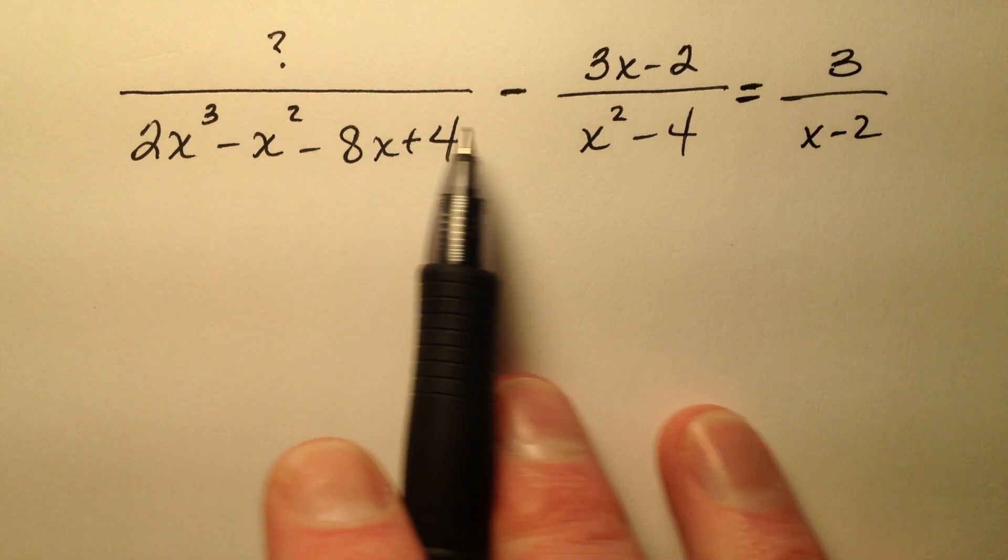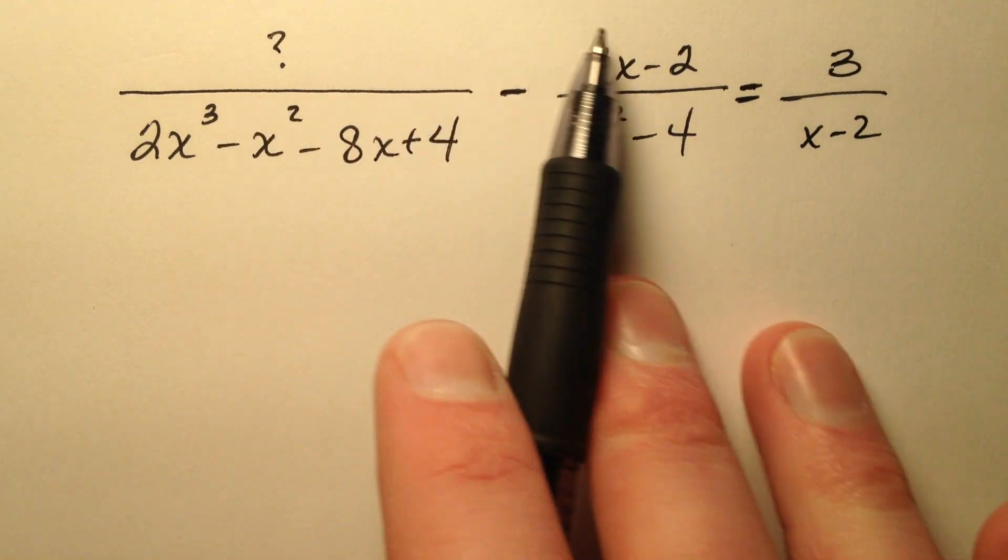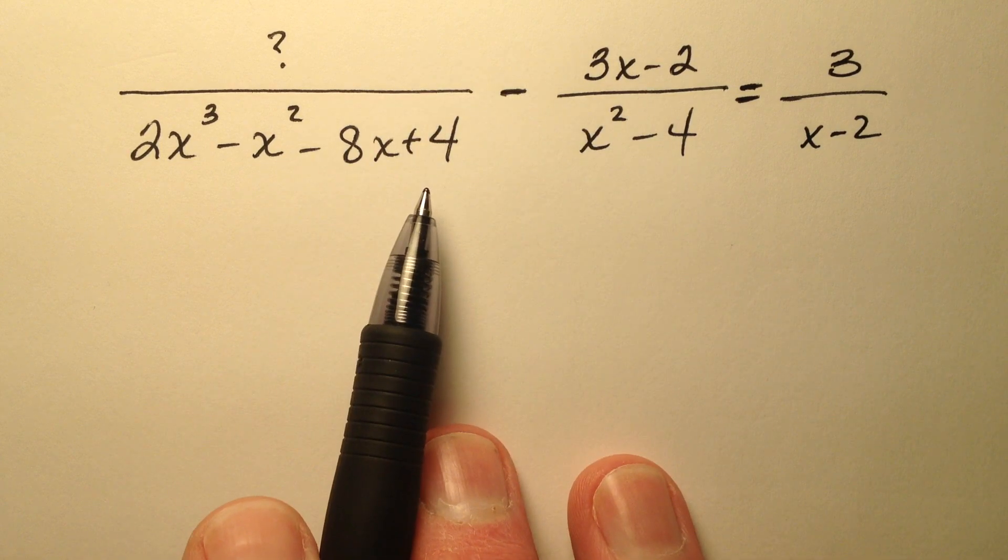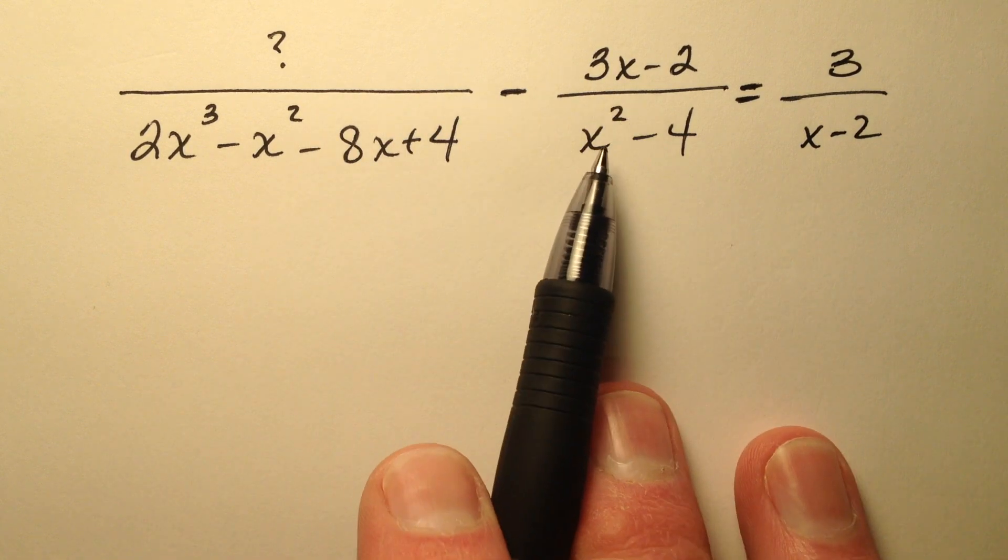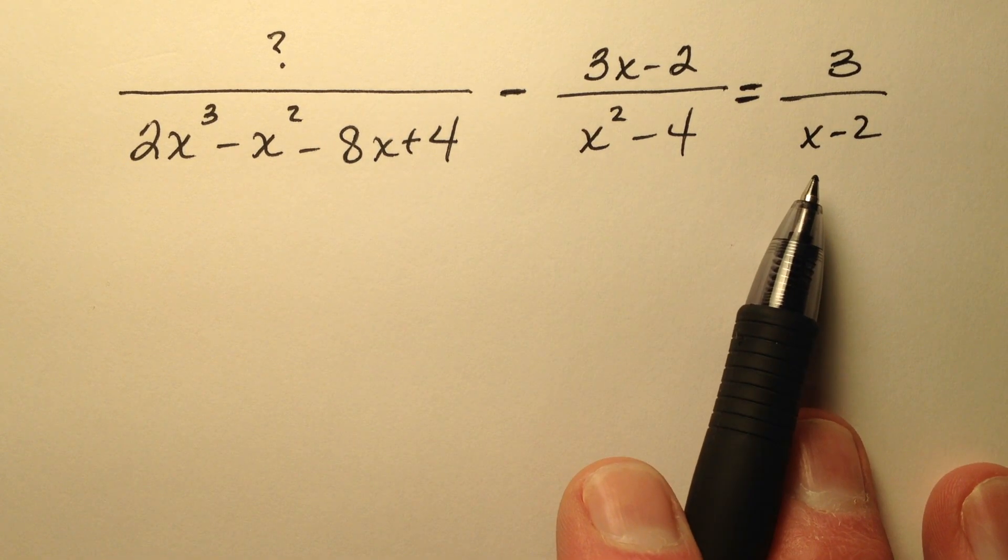In this video, I want to work through this problem where it looks like we have the subtraction of two rational expressions, and we know the difference right over here. So when I subtract them, I get 3 over x minus 2.